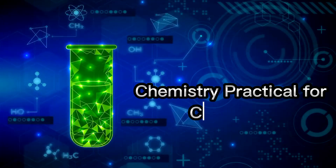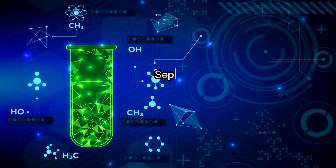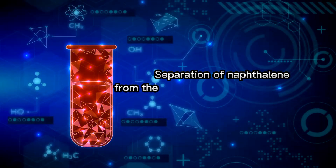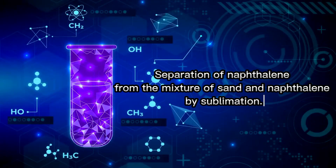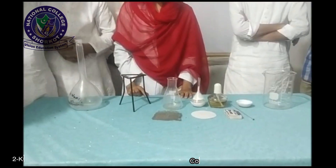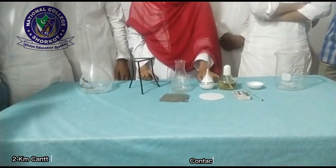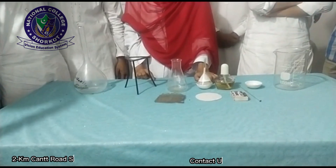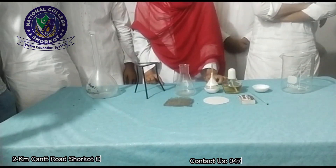Chemistry practical for class 10: separation of naphthalene from the mixture of sand and naphthalene by sublimation. This practical is about separation of naphthalene from a given mixture of sand and naphthalene by the sublimation process.